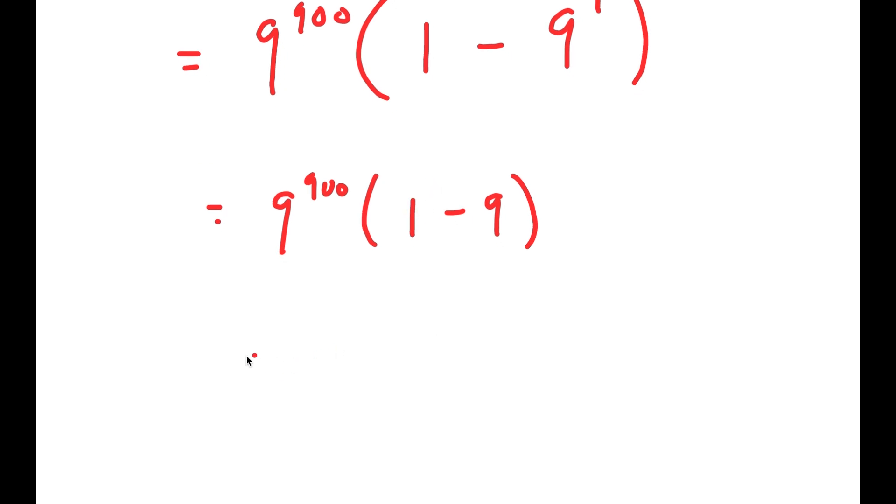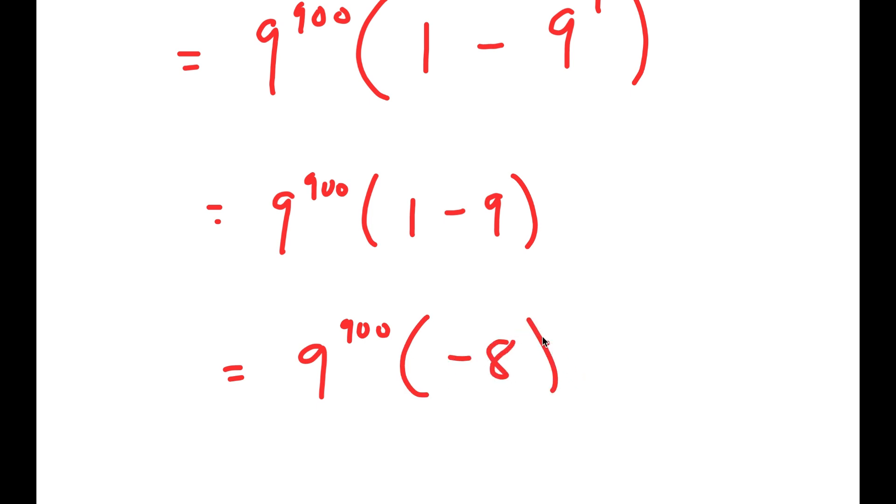This is equal to 9 to the power of 900 times 1 minus 9, because 9 to the power of 1 is the same thing as 9. And 1 minus 9 is equal to negative 8, so I get 9 to the power of 900 times negative 8.